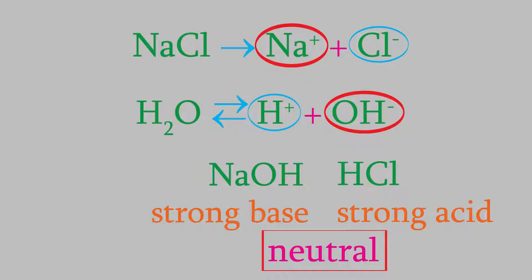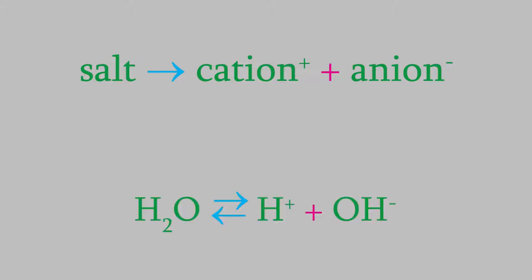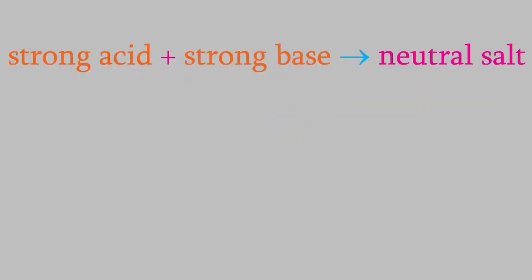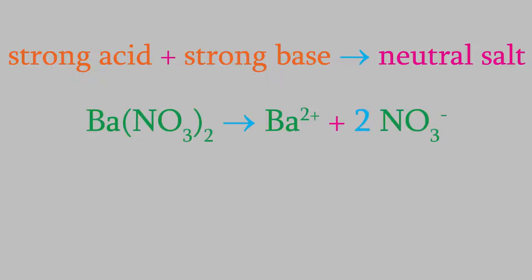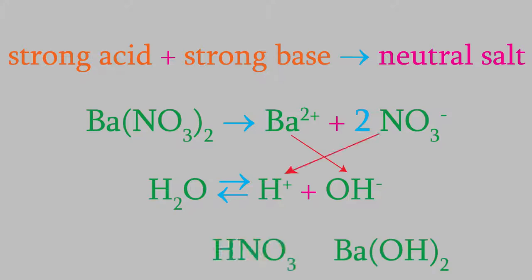So, in order to decide whether a salt will give us an acidic, a basic, or a neutral solution, we just need to look at the ions the salt is made of. We combine the positive ion with the hydroxide, and the negative one with the hydrogen ions. If the result is a strong acid and a strong base, the salt solution is neutral. For example, barium nitrate produces barium ions and nitrate ions, which combine with the ions in water to give barium hydroxide and nitric acid. Those are both on the list of strong acids and bases, so we get a neutral solution overall.